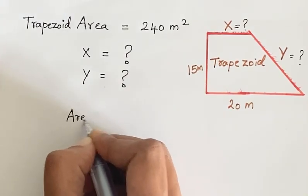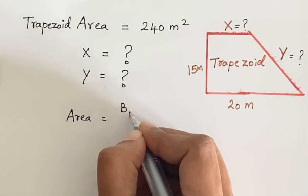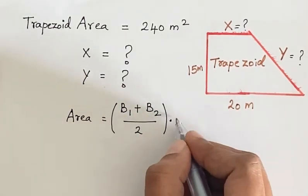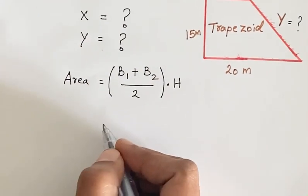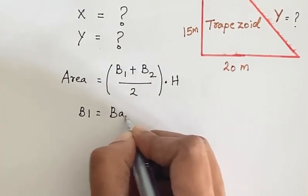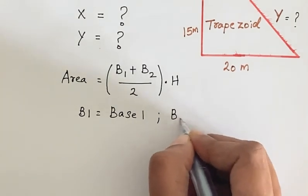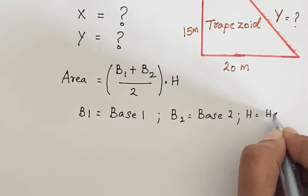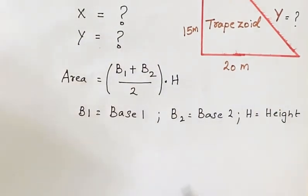We know the area of a trapezoid is given by base 1 plus base 2 divided by 2 times the height. Here B1 is base 1 length of the trapezoid, B2 is base 2 length of the trapezoid, and H is the height.